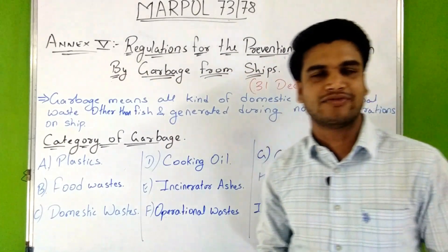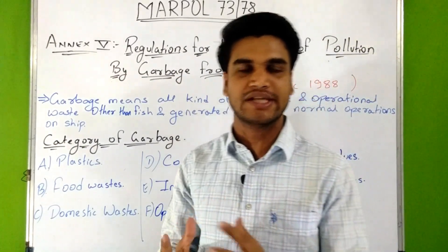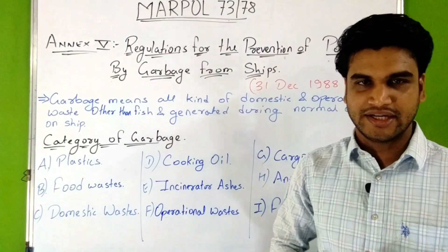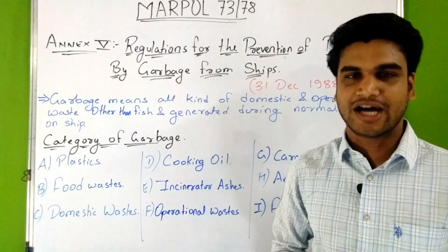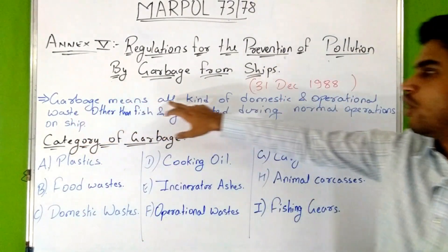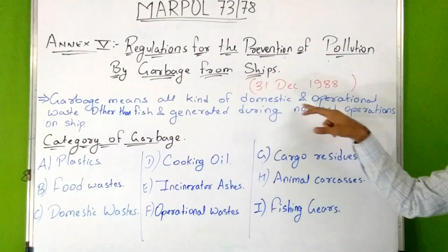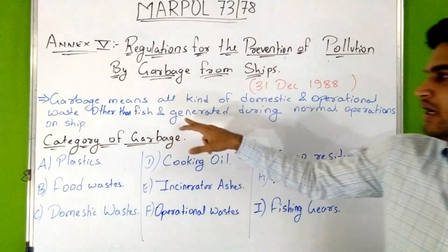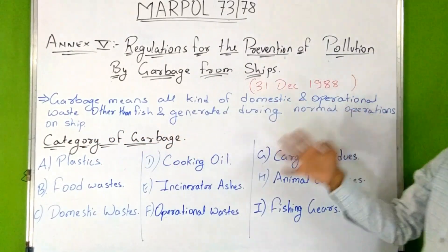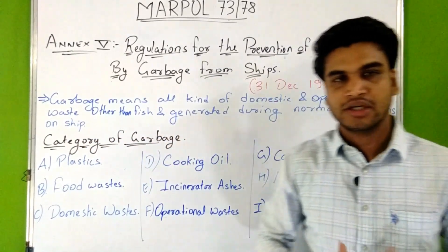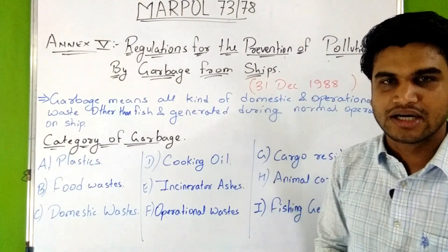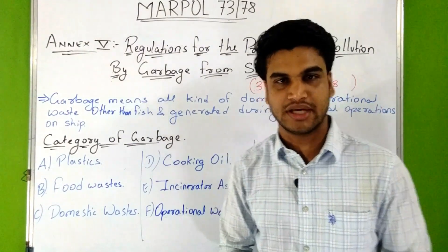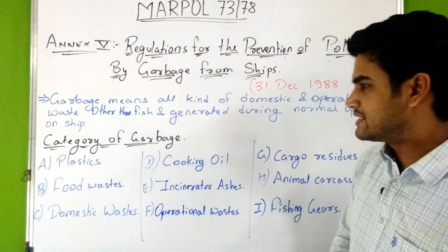This Annex 5 came into force on 31st December 1988. According to this Annex, garbage means all kinds of domestic and operational waste other than fish, generated during normal operations on a ship. This garbage is categorized into different categories according to this Annex.